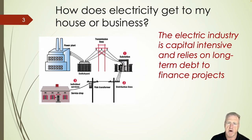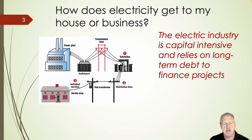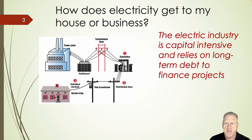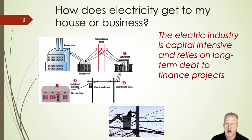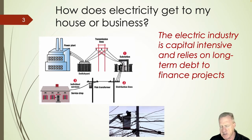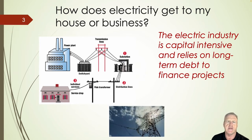When you talk about how electricity gets to your house, the key components to keep in mind are the power plants, the substations, the transmission lines, and the distribution facilities that get electricity to the service drop and ultimately the end user. This makes the electric utility industry very capital intensive — it relies on long-term debt to finance projects. You build big projects: power plants, distribution facilities, transmission facilities, and those projects are financed with long-term debt paid to bondholders.